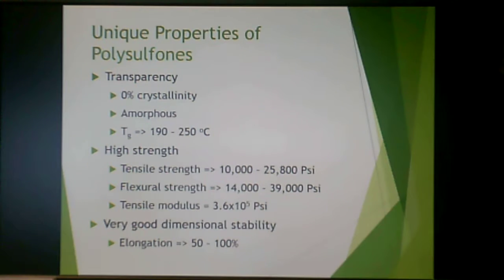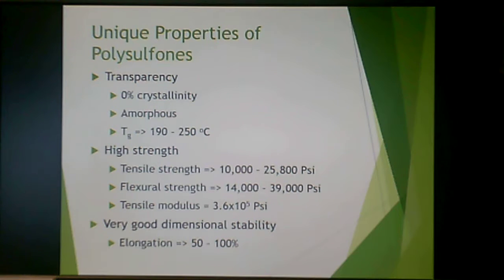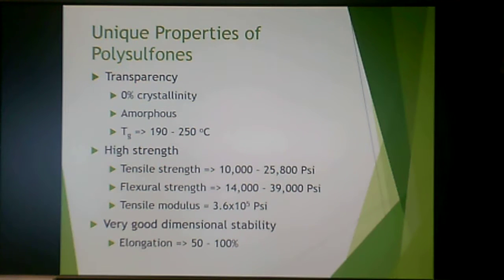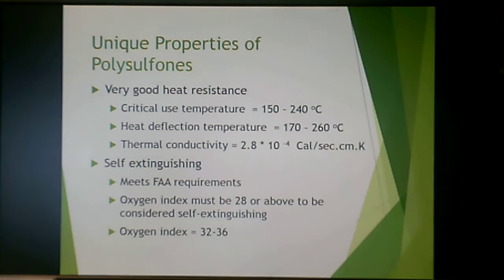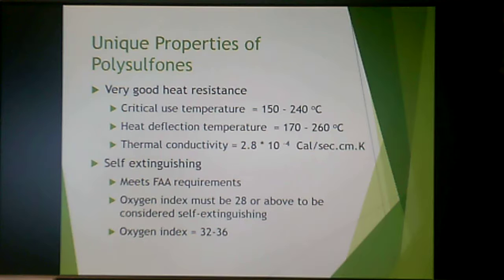The properties of polysulfone are that it has no crystallinity — 0% crystallinity, 100% amorphous. Its Tg is very high for being 100% amorphous: 190 to 250°C. It has high strength both tensile and flexural, and its tensile modulus is also very high. It has very good dimensional stability, very good heat resistance, a critical use temperature up to 240°C, and a heat deflection temperature up to 260°C.